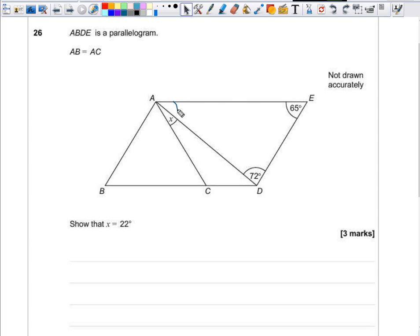So to work out this missing angle here at EAD, I know that would be 180 degrees, take away the two angles that we know, 72 and 65. 108, 48, 43 degrees.